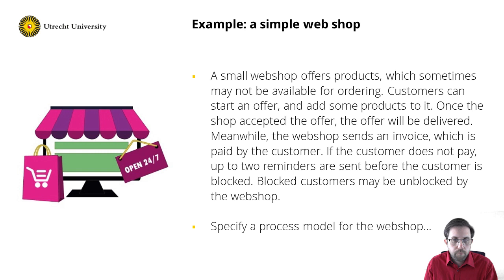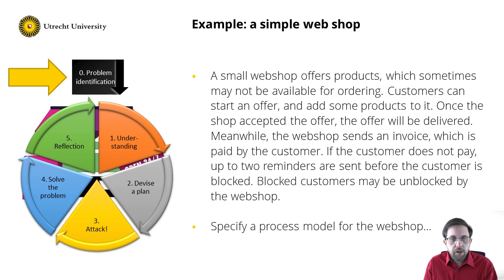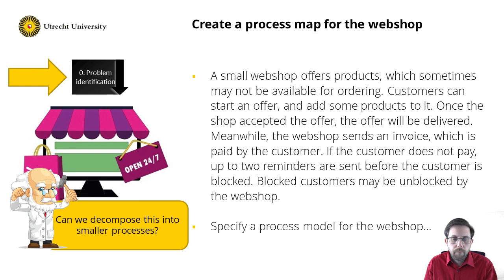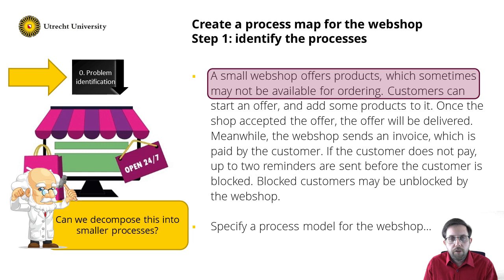So let's apply this to the webshop example. Step zero is to identify the problem — the question is to specify a process model, but to answer this we first need to identify the processes by creating a process map. The first process we can identify is about products: the webshop offers products and these are sometimes unavailable, so there is some process going on about the availability of products. Next, we read that customers can start an offer and that this offer is processed by the webshop — so that is a process as well.